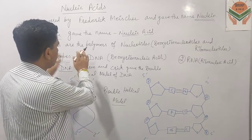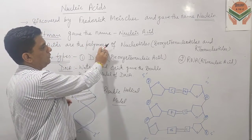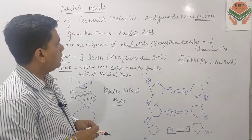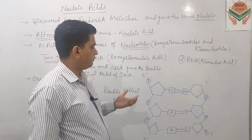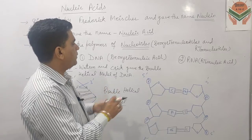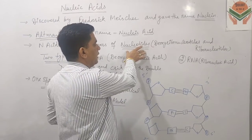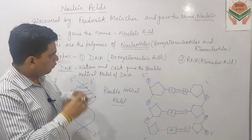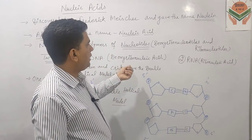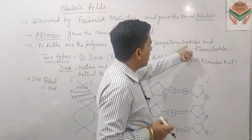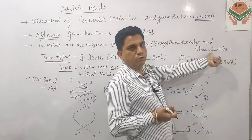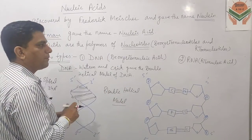Nucleic Acids are macromolecules and these are the polymers of nucleotides — जो हमने last lecture के अंदर बात की थी। जब एक pentose sugar का molecule, एक phosphate group, और एक nitrogenous base आपस में combine करते हैं, तो बनने वाले organic compound को हम nucleotide बोलते हैं। ये nucleotides, depending upon the type of pentose sugar, दो types के होते हैं: deoxyribonucleotides and ribonucleotides — यनि DNA वाले nucleotides और RNA वाले nucleotides।